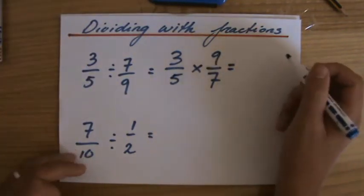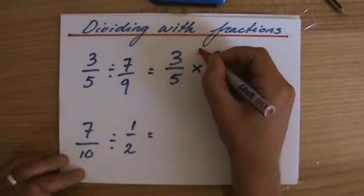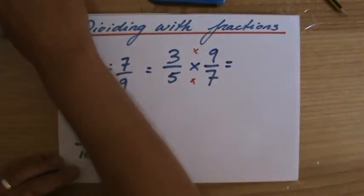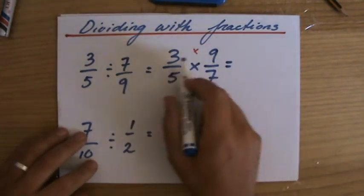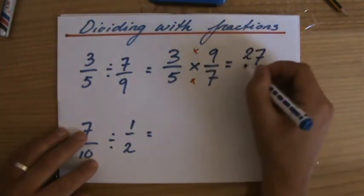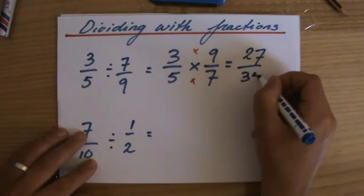Fantastic. 3 times 9, multiplying fractions. Easy peasy. I love fractions now. I did it a while ago, but now having seen all those videos about fractions, I really love it. 3 times 9, 27. 5 times 7, 35.